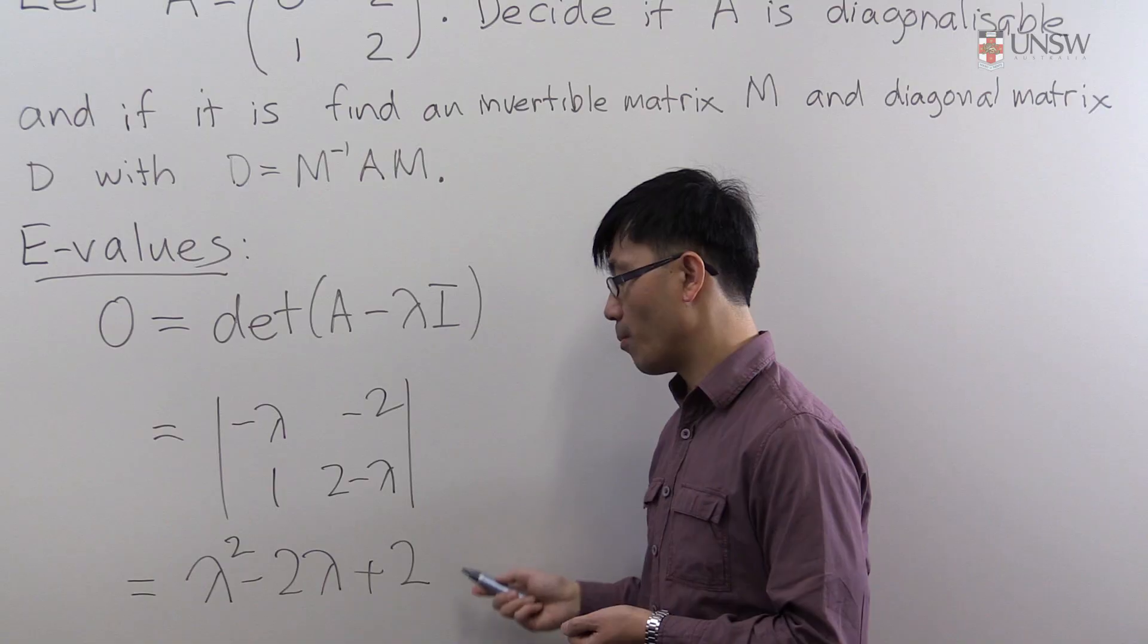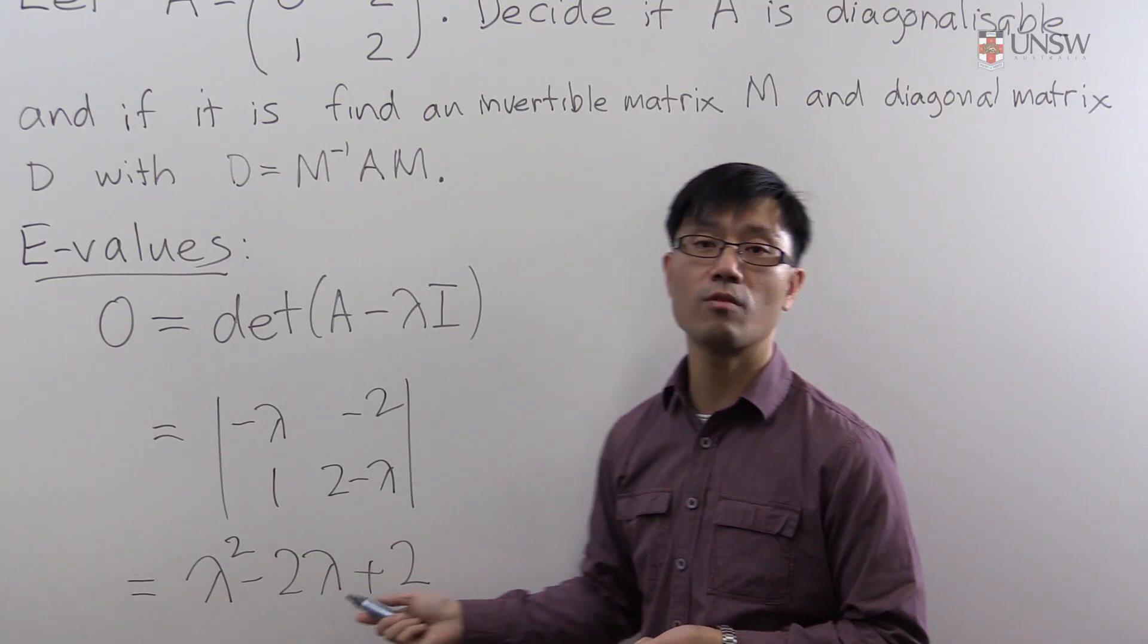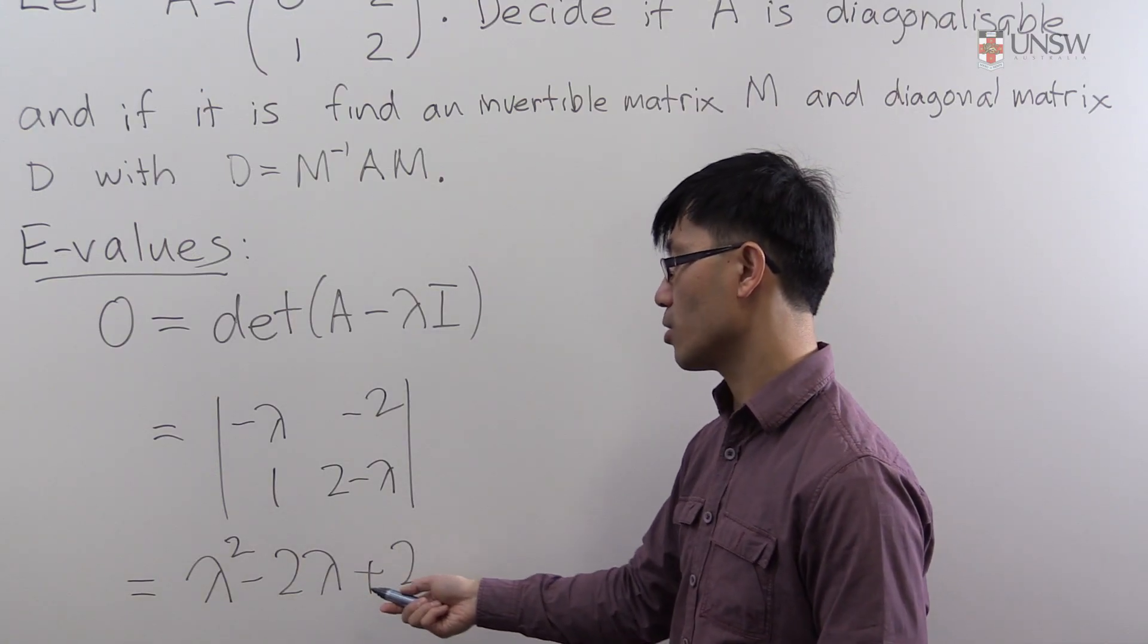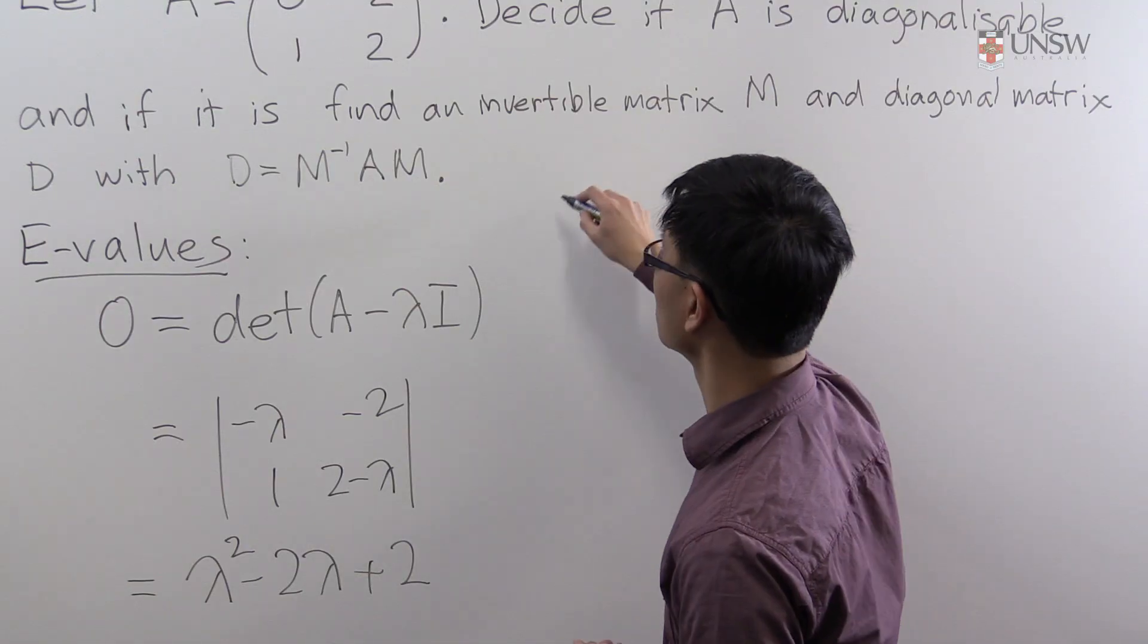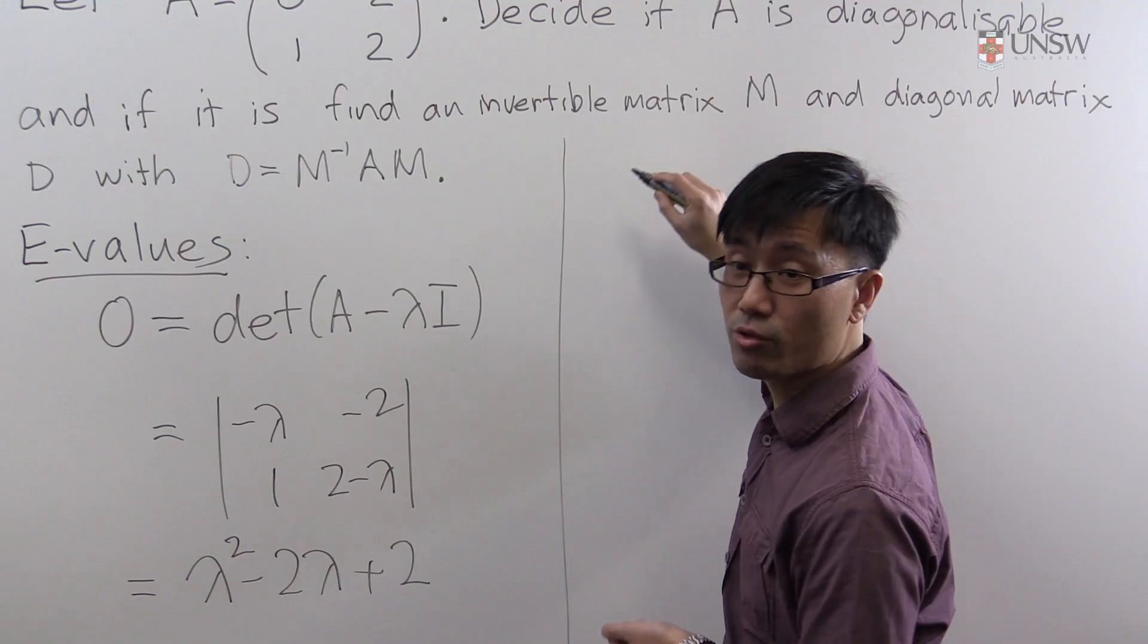So this is a quadratic polynomial as you would expect since this is a 2 by 2 matrix. And we can solve it either by completing the square or by using the quadratic formula if need be. So let's use the quadratic formula.